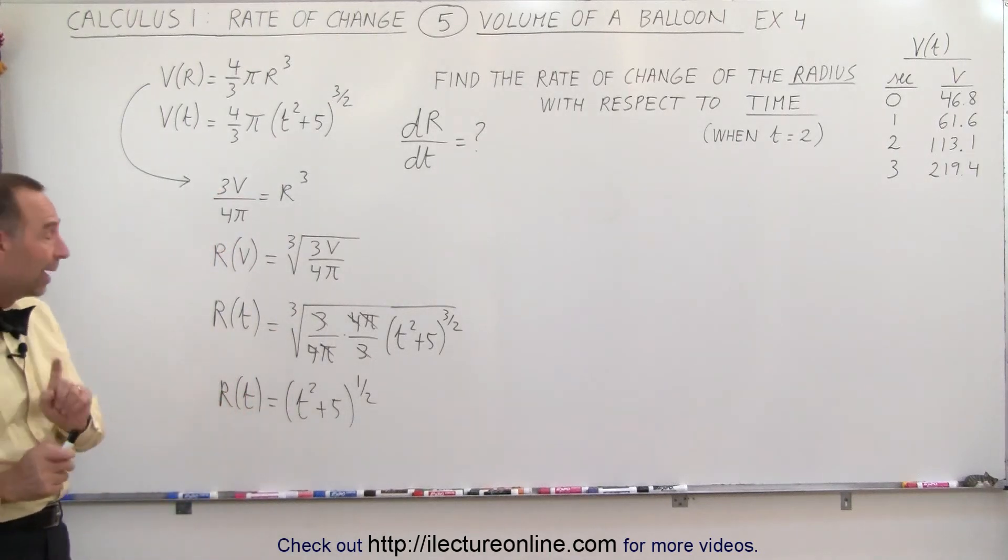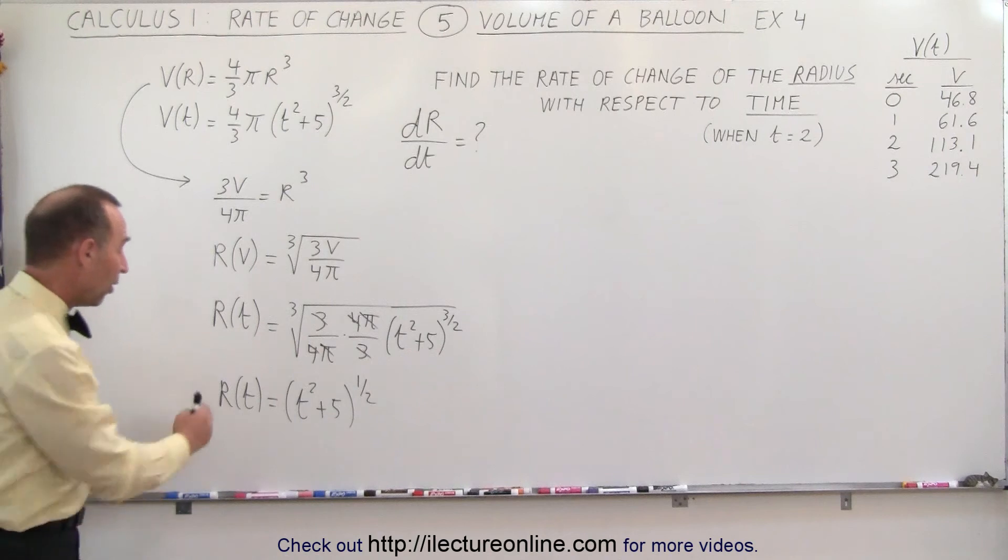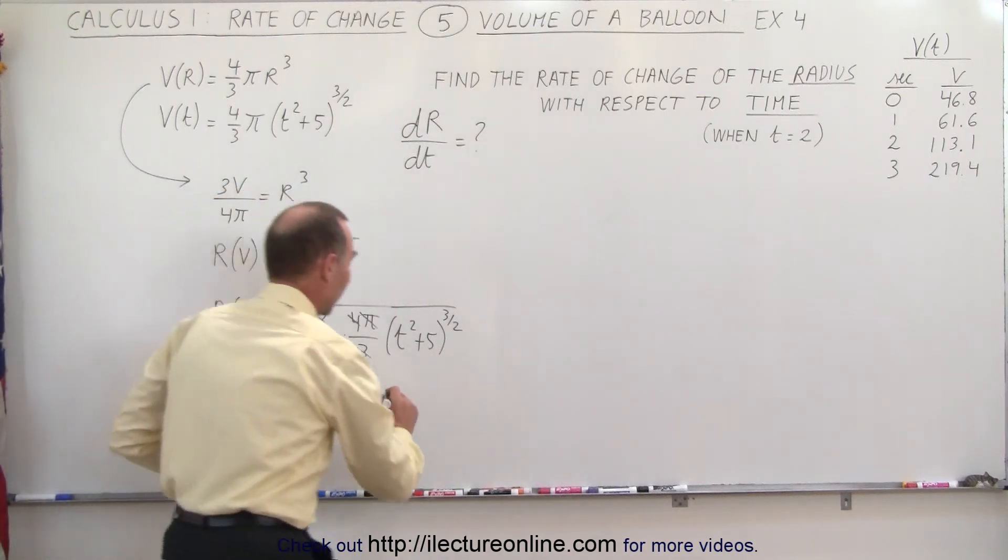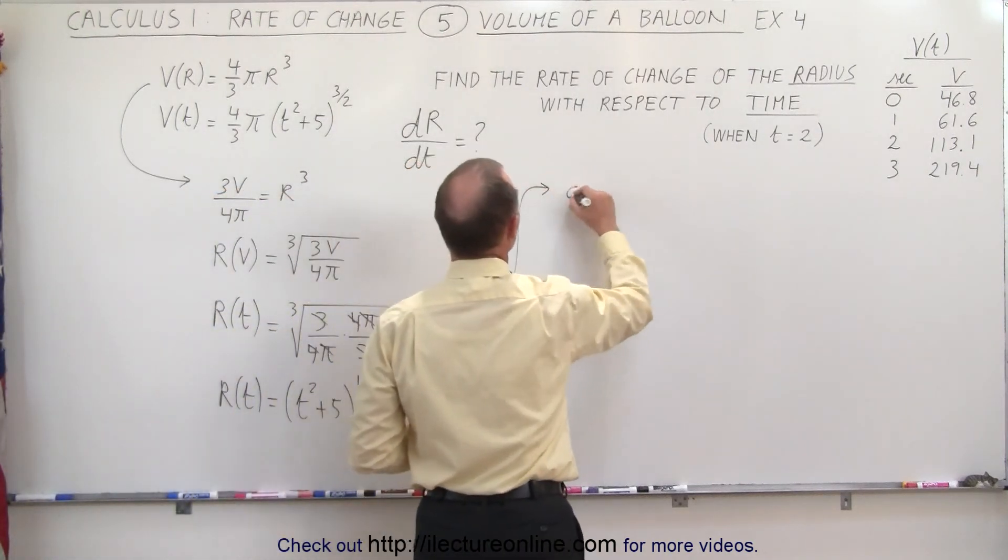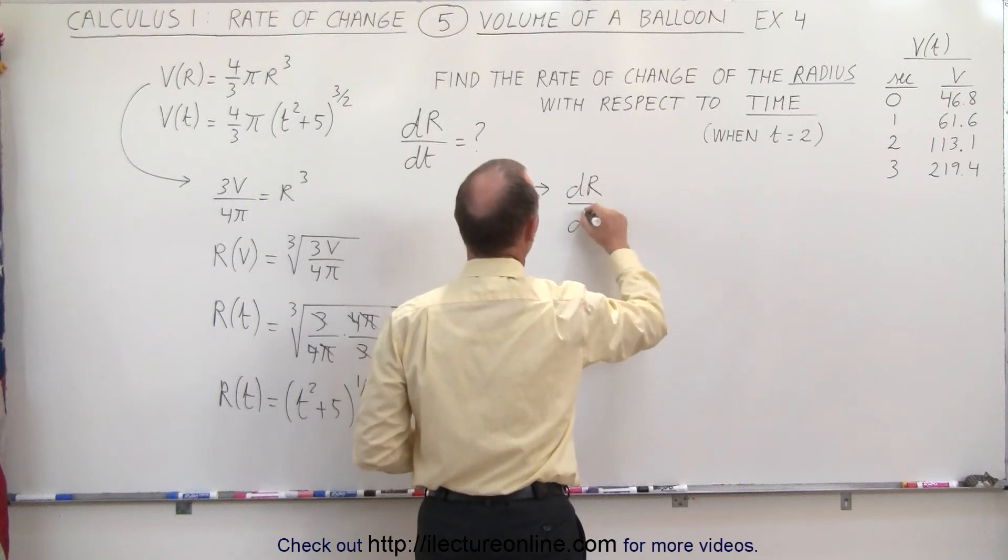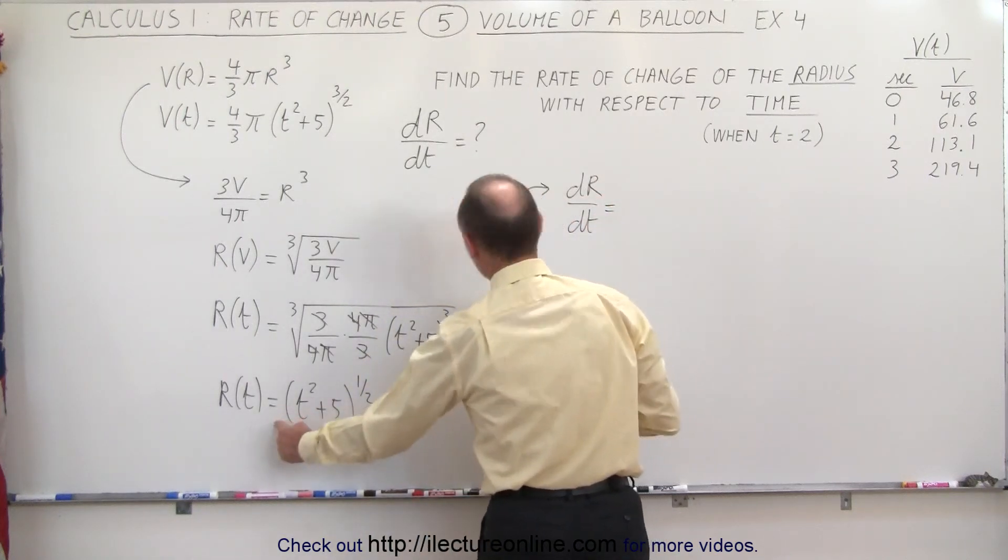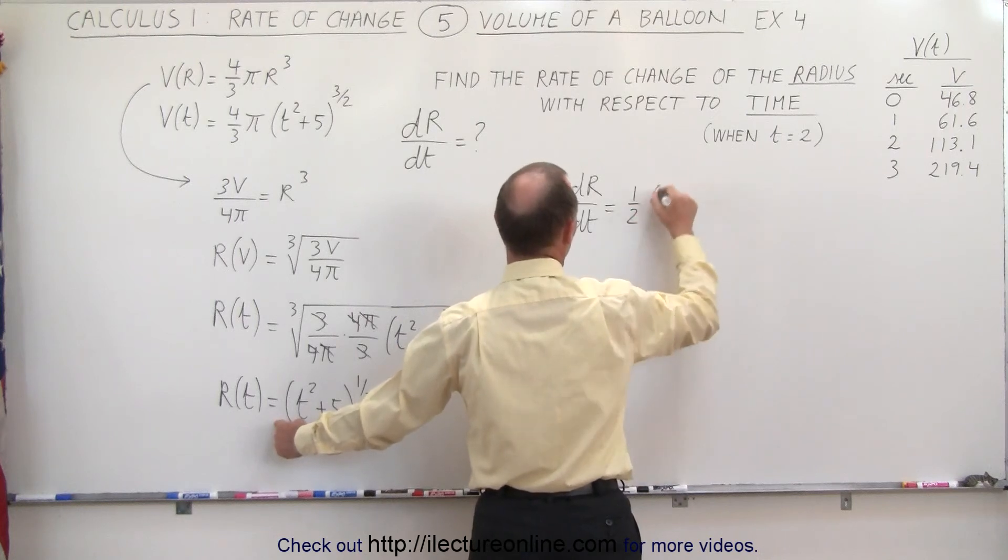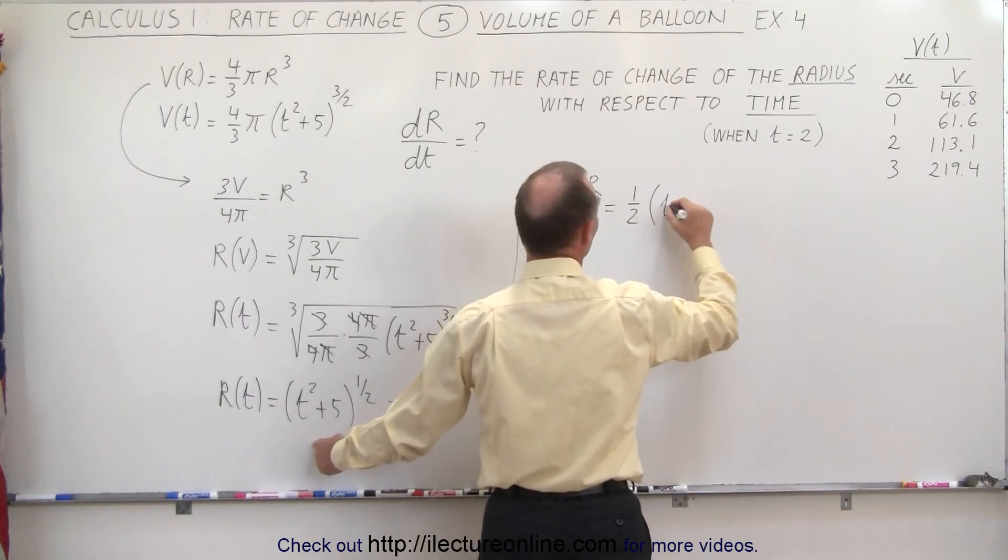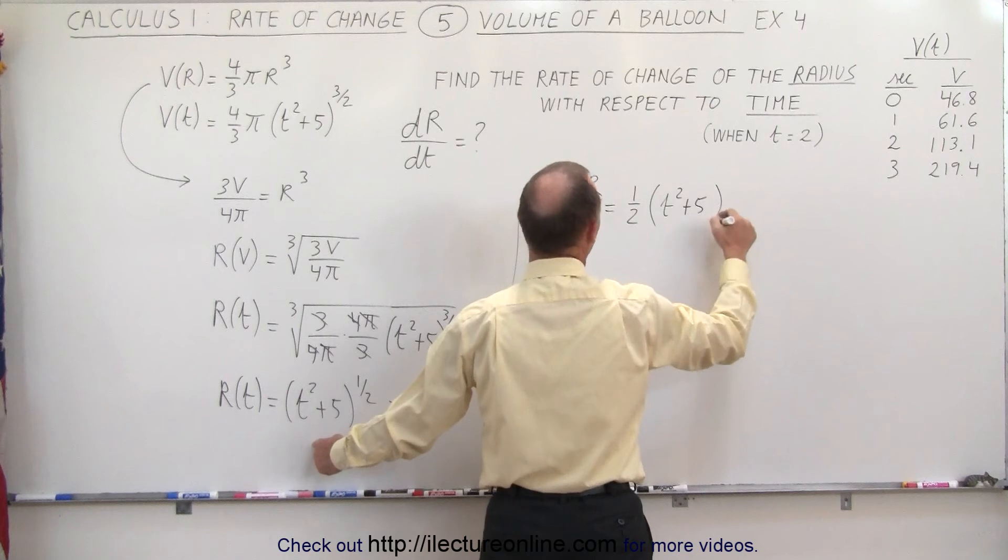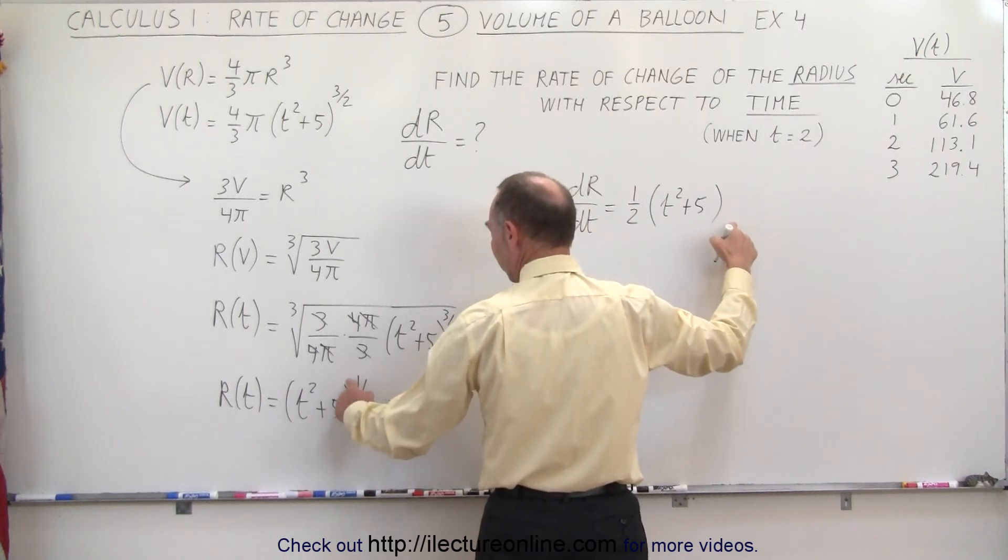And now, we can go ahead and find the dr/dt. So now we have r as a function of time. So now, we can say that dr/dt is equal to, when we take the derivative of this, we put the 1/2 in front, times t² + 5, times to the exponent minus 1, which is minus 1/2,